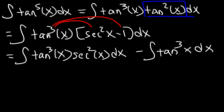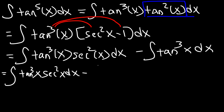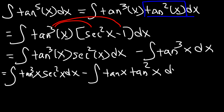Now, for tangent cubed, we can take out another tangent squared and repeat the process. So it's going to be tangent times tangent squared x. Then let's replace tangent squared with secant squared minus 1.